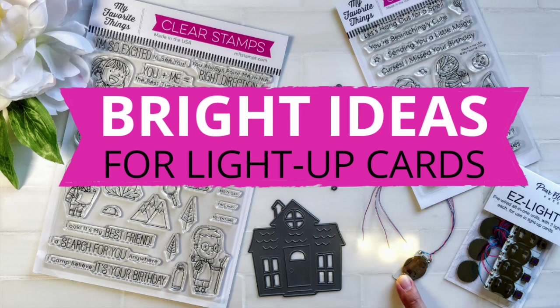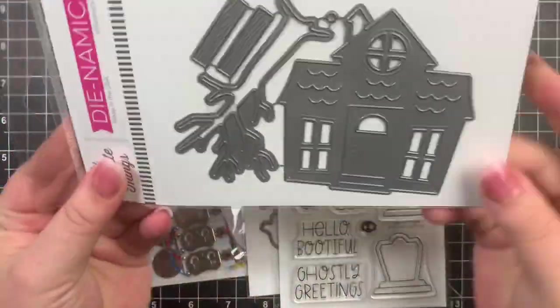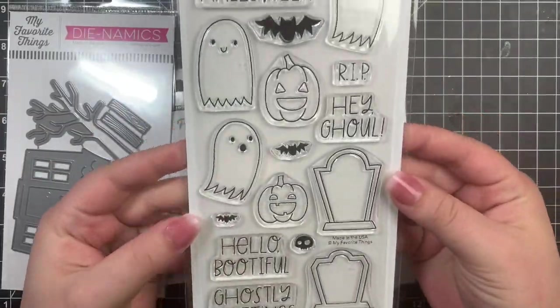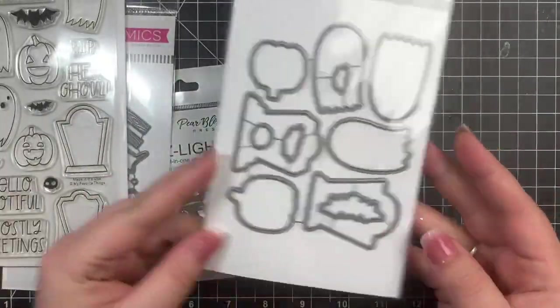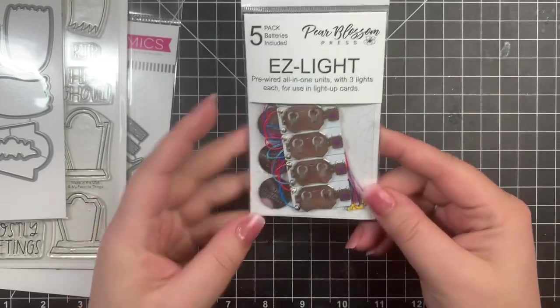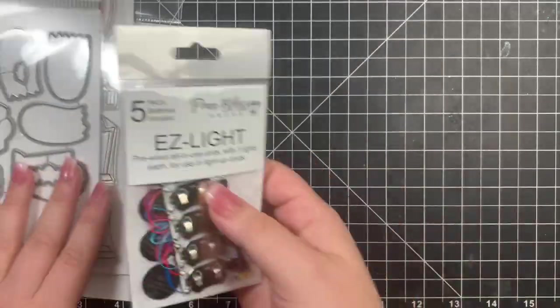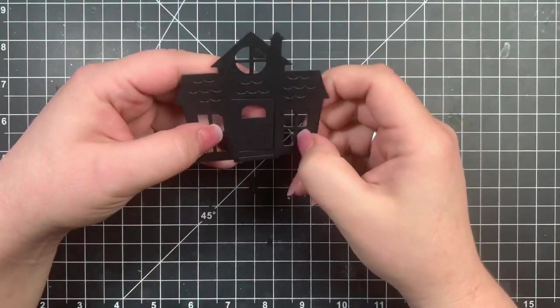Hey guys, it's Courtney and I am very excited to be a part of the Bright Ideas Hop featuring MFT and Pear Blossom Press. I'm going to be using the Haunted House Dynamics as well as the Ghostly Greetings stamp sets with the matching dies, and of course the Easy Lights by Pear Blossom Press, which are extremely easy to use and I was surprised because this is my first time.